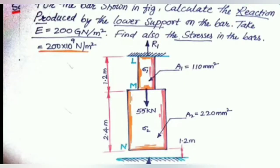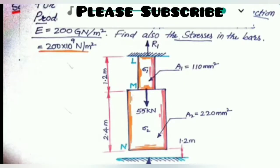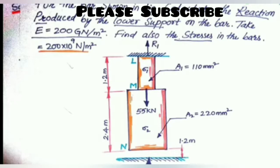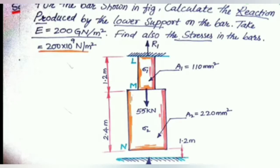For the bar shown in the figure, calculate the reaction produced by the lower support on the bar. Take Young's modulus equal to 200 giganewton per meter square. Find also the stress in the bar.